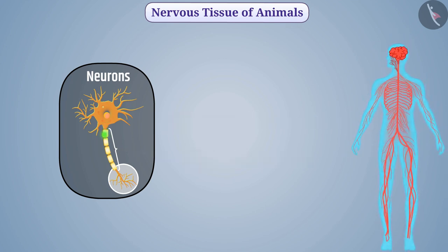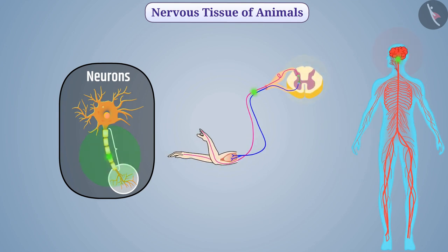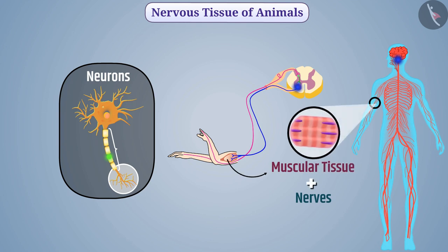Nerves transmit nerve impulses to the brain or spinal cord. The brain or spinal cord takes a decision to respond appropriately, and nerves arising from the brain or spinal cord conduct this information back.